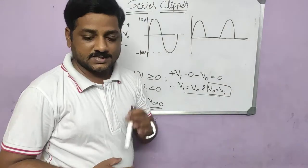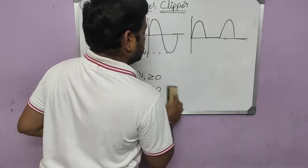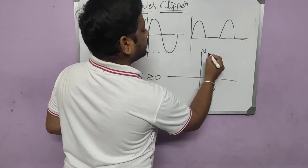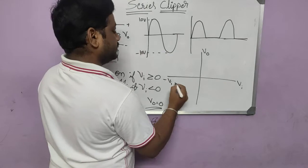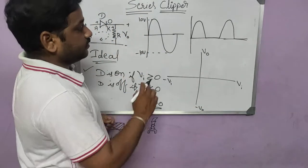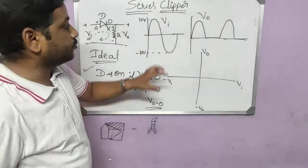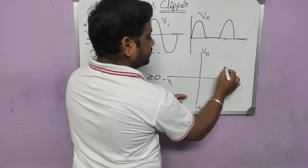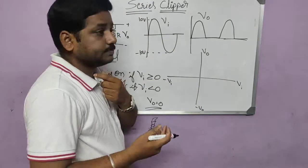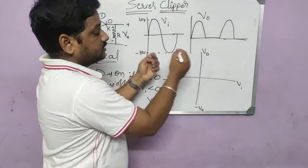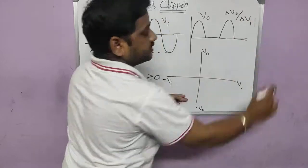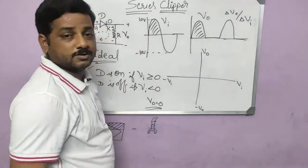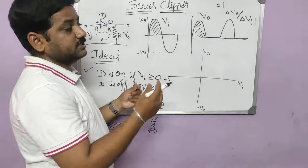Now let us understand how to draw the transfer characteristics. The transfer characteristic is a graph between output voltage and input voltage. We know output follows input only at the positive cycle. So in the positive region, we get a slope. Slope is the ratio of change in output voltage to change in input voltage. Since the same change occurs in both input and output, the slope equals 1. So in the positive region, starting from zero, we draw a slope of 1.